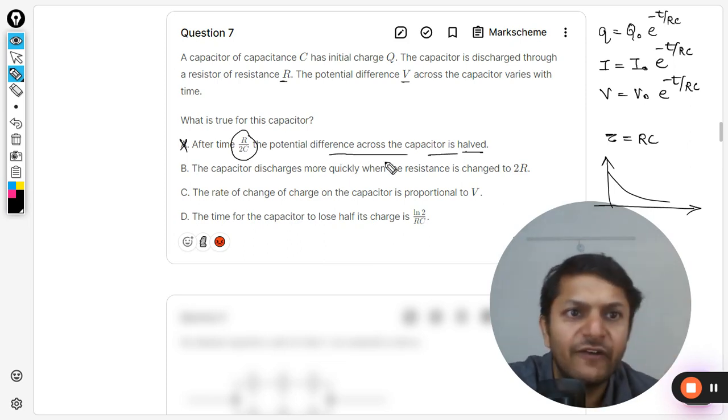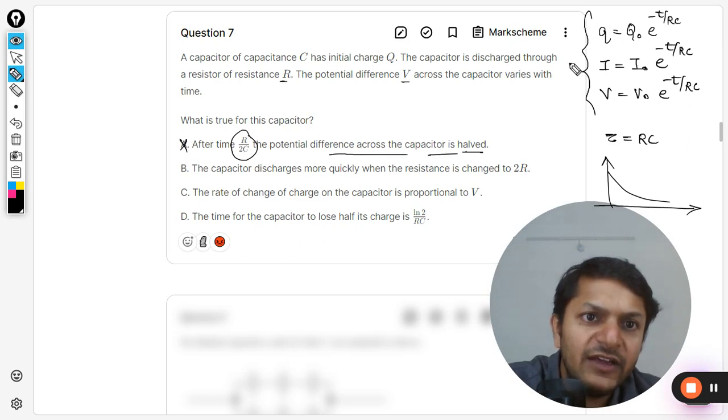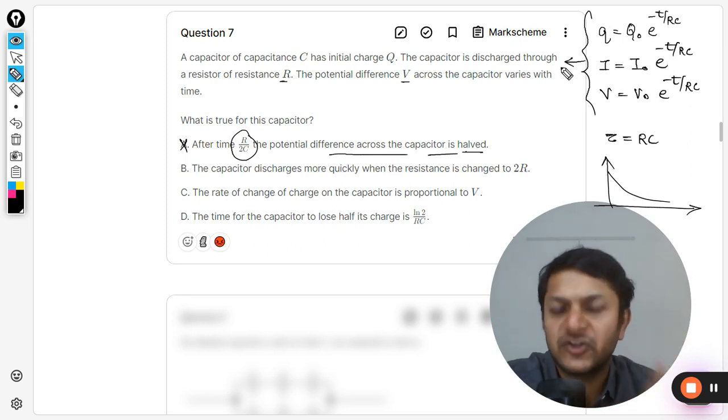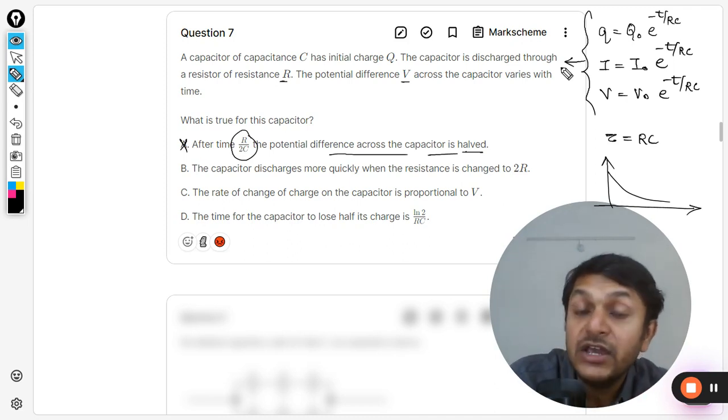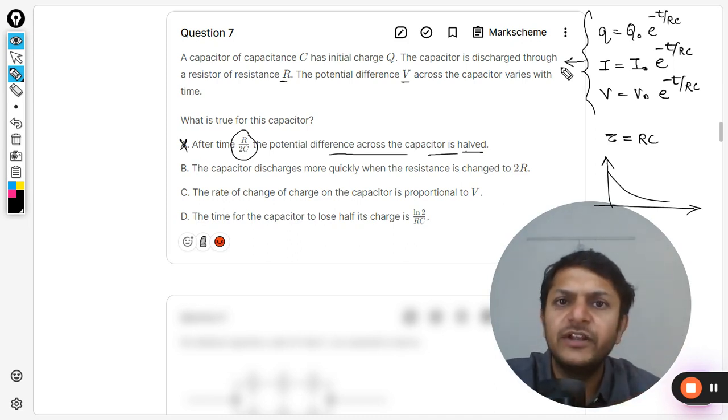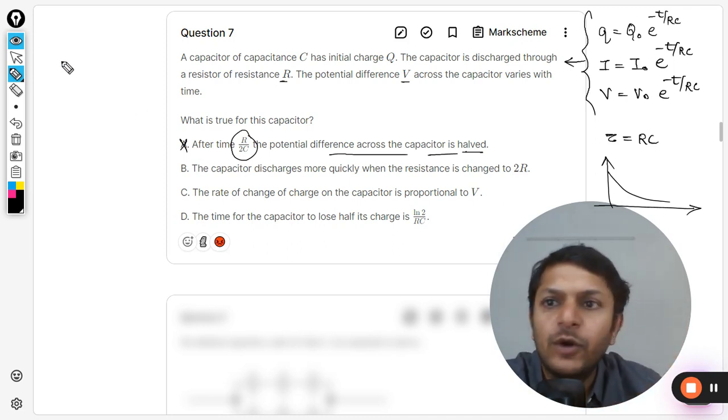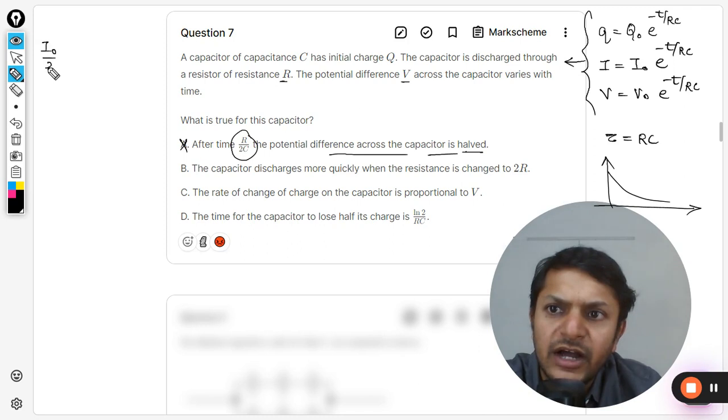But he's talking about the potential difference to become half, so let me talk about the half-life here. Half-life is the same for all of the variations because they are varying with the exponential and even the exponent for the exponential is the same. So we can say that half-life will be same for Q, I, as well as for V, all of them.